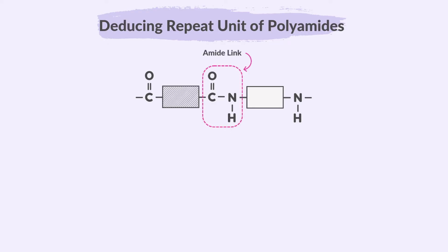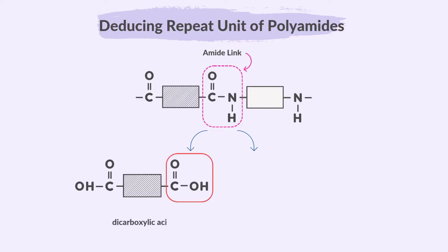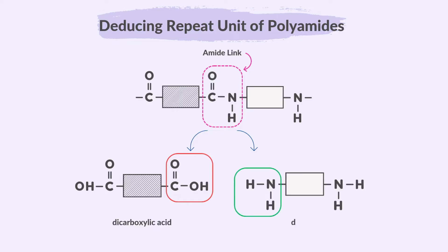For the reverse process — that is, polyamide to monomers — we identify the amide linkages in the polymer, then break the amide linkages to get the original dicarboxylic acid and diamine monomers.